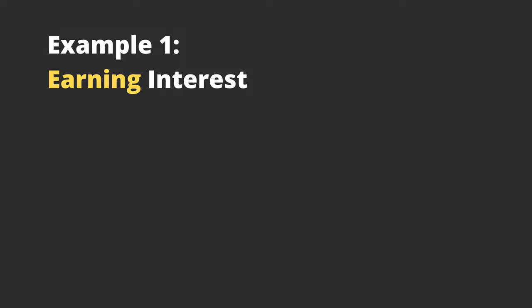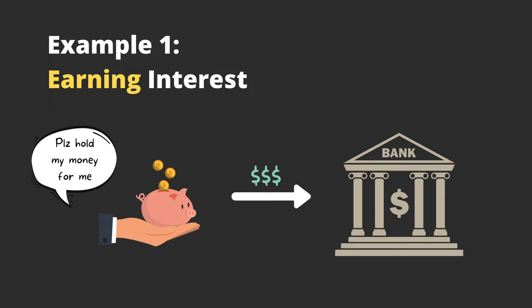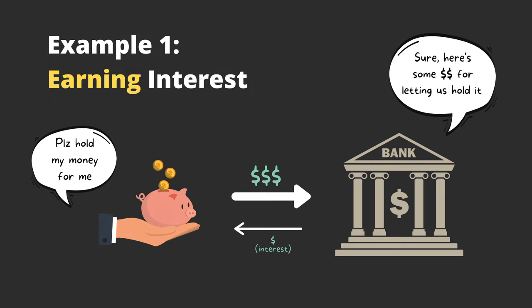For example, if you put your money into a savings account at the bank, they will pay you what's called an interest for keeping your money with them. They're basically saying, thanks for choosing us and letting us handle your money. Here's a little bit of extra cash for banking with us. This money that you get from interest, you get to keep, which is basically free money.